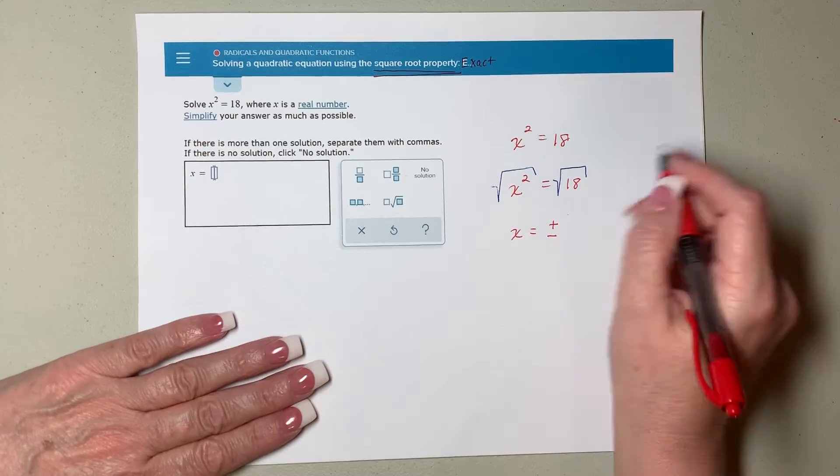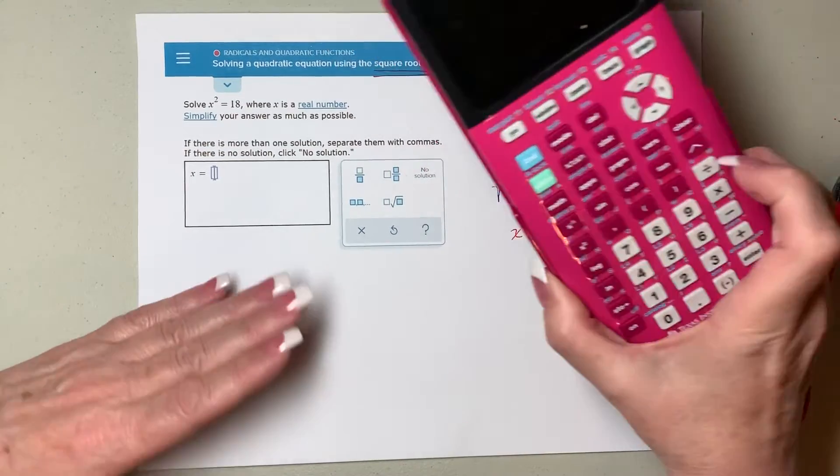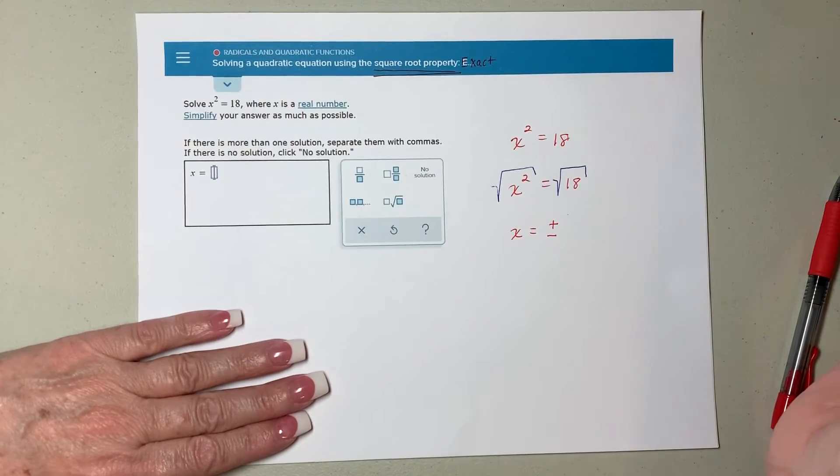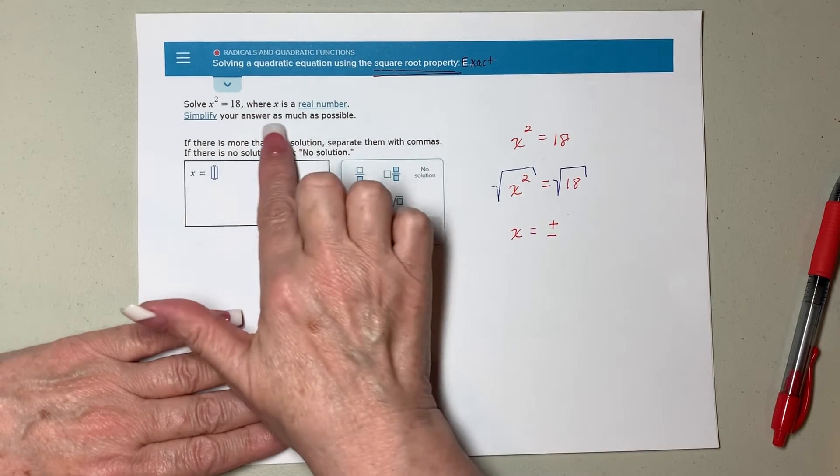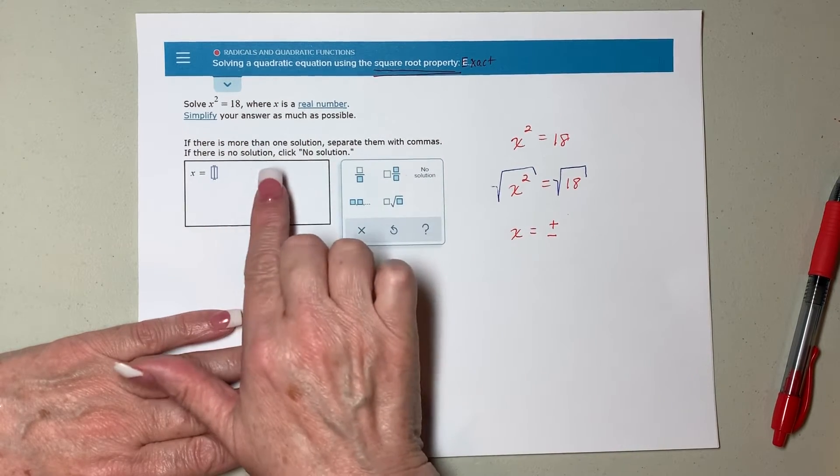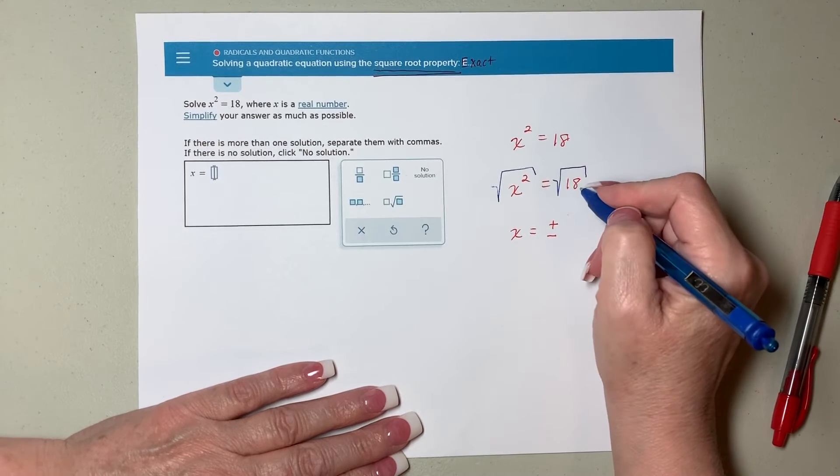Now, normally, I grab my handy-dandy calculator. But that would take me to decimal land and I'd have to round off. They did not ask for that. They said just simplify it as much as possible. If they had wanted a decimal, they would have said round off to the nearest something or other. And they didn't. So what they want me to do is simplify my radical.